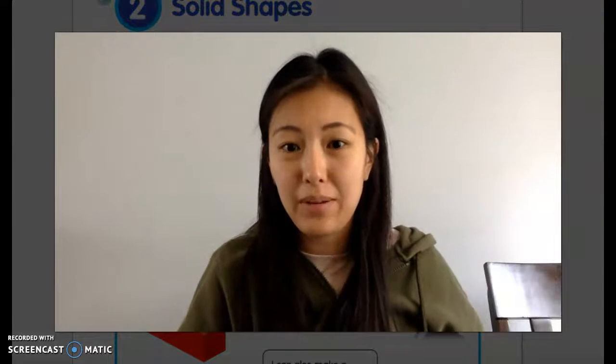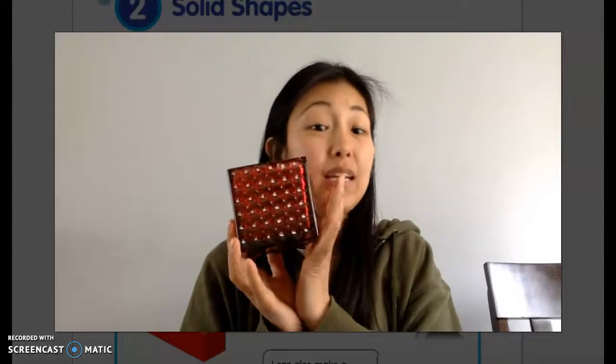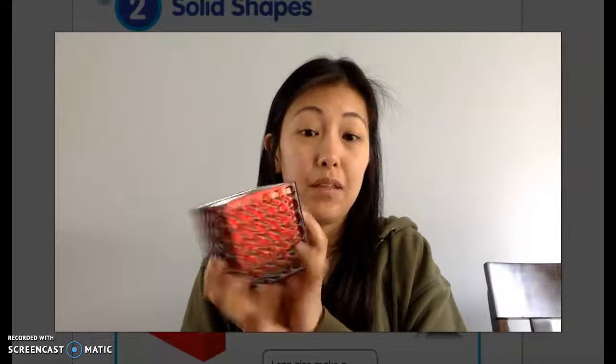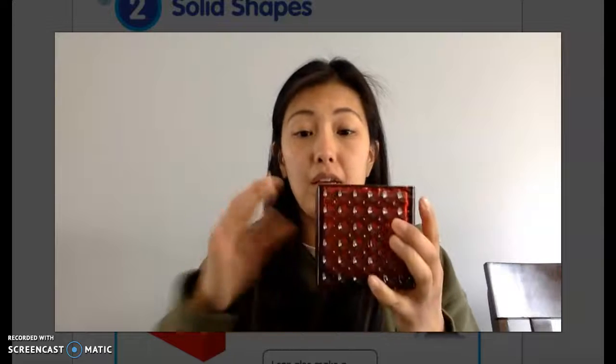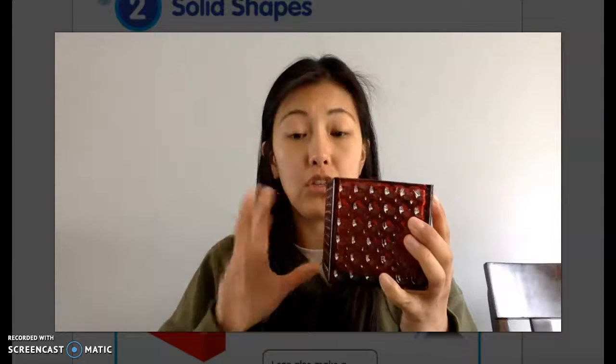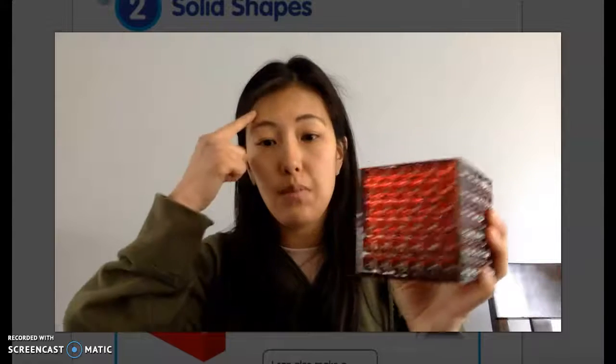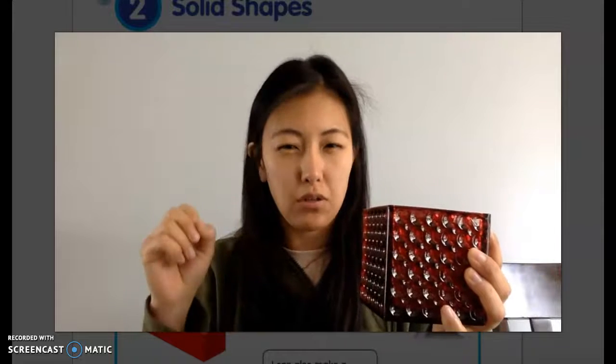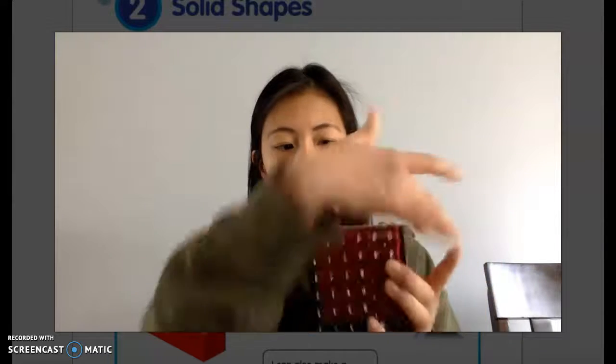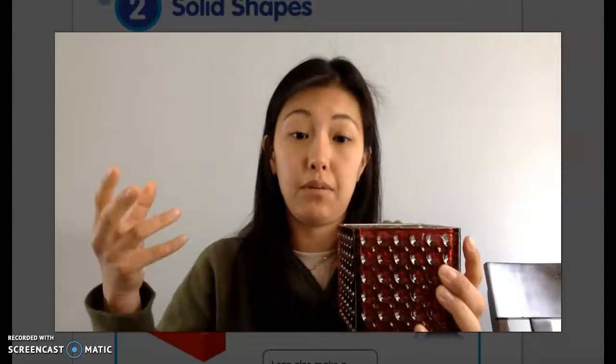So here we have the first solid shape which is a cube. A cube could be like a tissue box, which is a great example. The cube here has a certain amount of solid shapes. When Ms. Laspisa tries to count the solid shapes, it's very important that you remember where you started and you don't want to over count them.